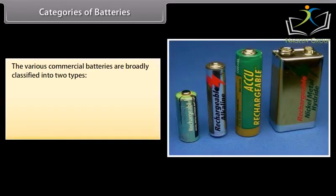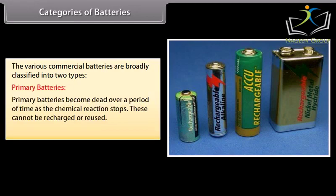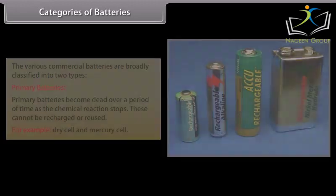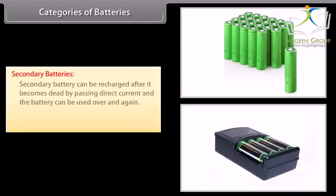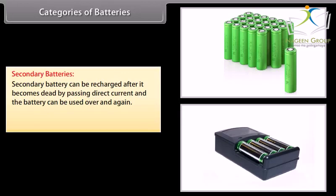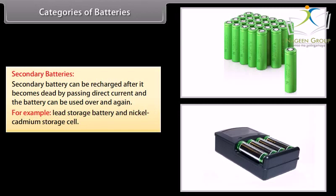Categories of batteries. The various commercial batteries are broadly classified into two types. Primary batteries: Primary batteries become dead over a period of time as the chemical reaction stops. These cannot be recharged or reused. For example, dry cell and mercury cell. Secondary batteries: Secondary battery can be recharged after it becomes dead by passing direct current and the battery can be used over and again. For example, lead storage battery and nickel cadmium storage cell.